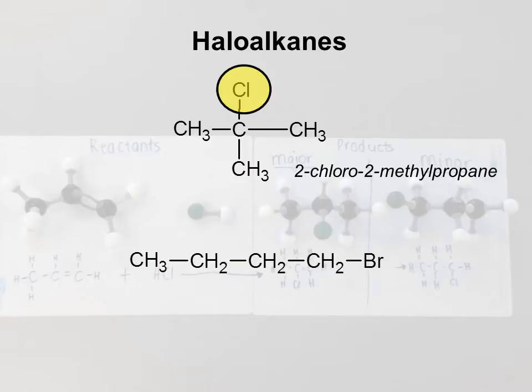Okay, next one is also a haloalkane. In this case we have a bromine which we name bromo, coming off the first carbon, so it's 1-bromobutane.